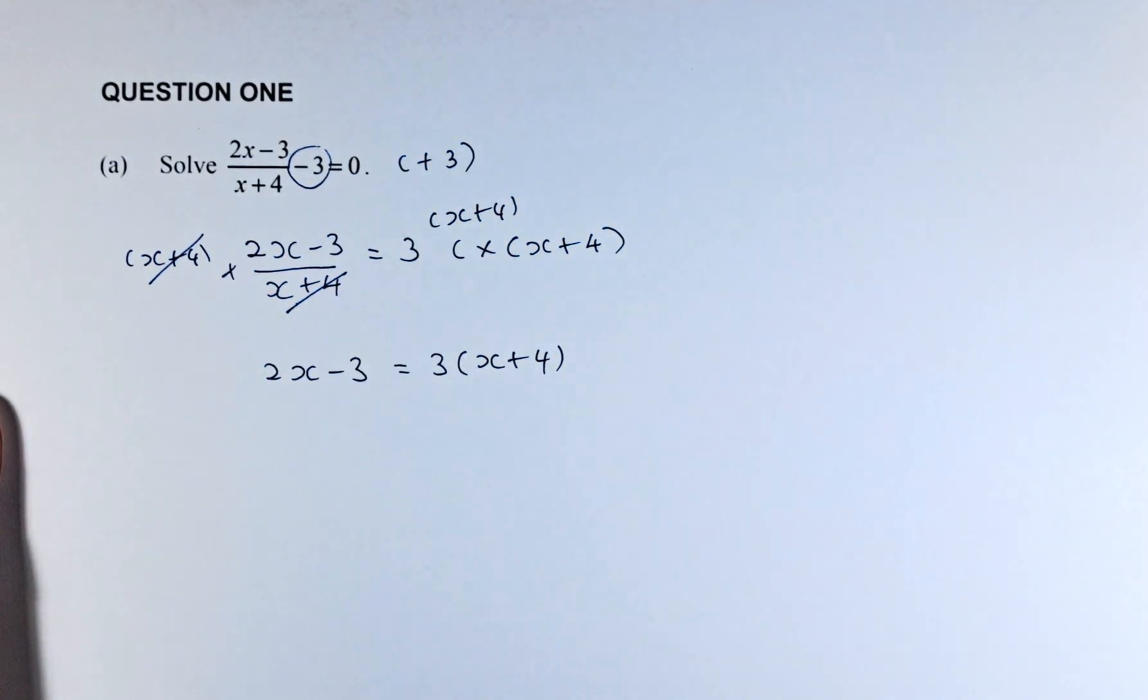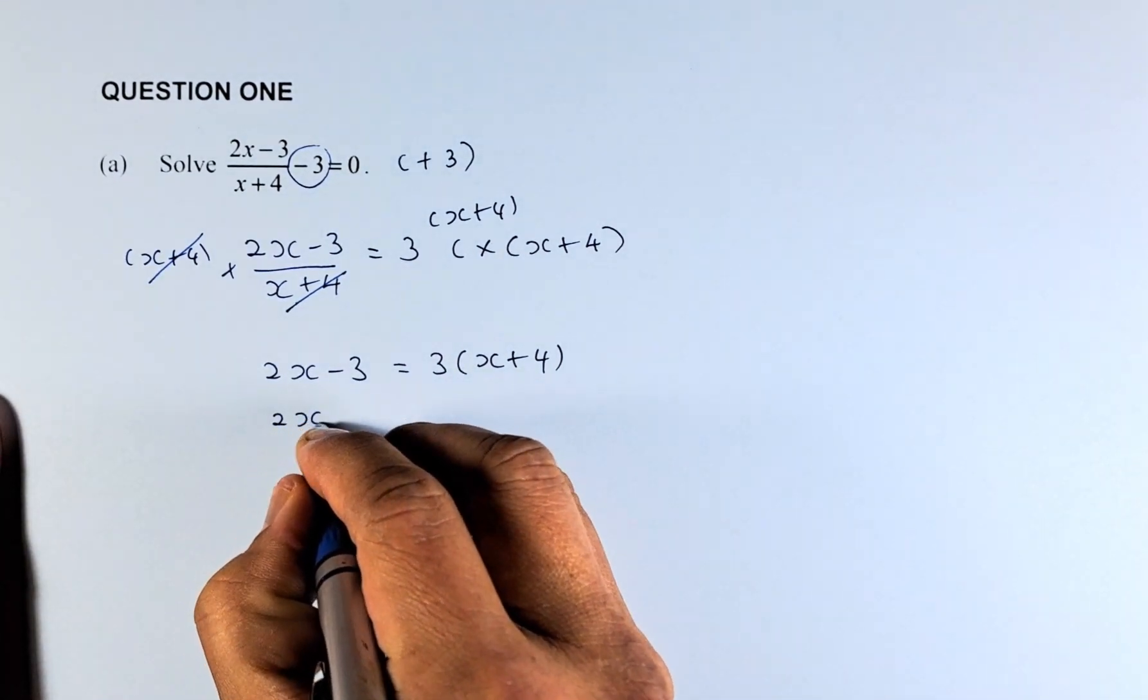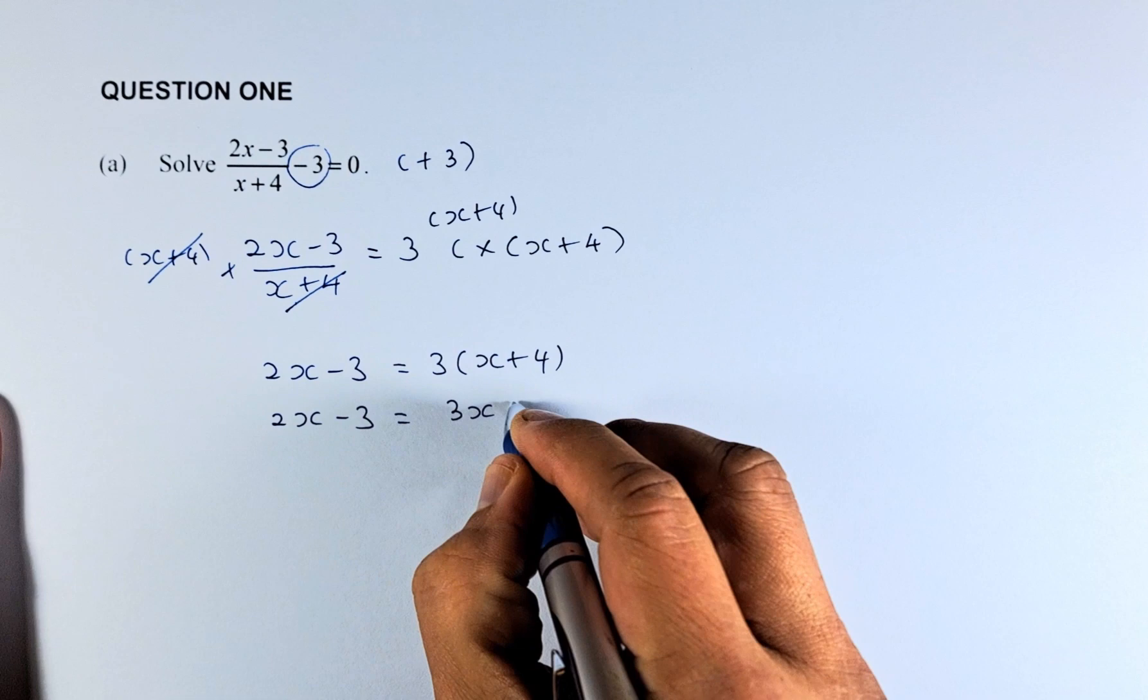Now, the next step, we are going to expand this expression. So it's going to be 2x - 3 = 3x + 12.